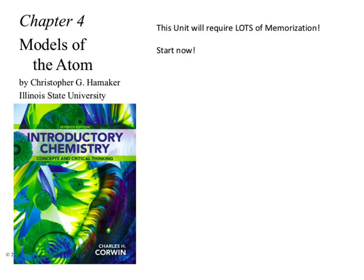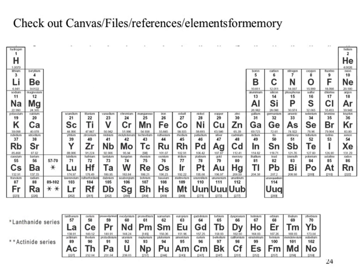Moving into Chapter 4, which looks at models of atoms. This is largely memorization — we're now entering a history class. We'll talk about the history of how we got to the atomic models we have today. For the elements sheet, what you need to memorize at this stage is the element name to its symbol — for example, boron is B.